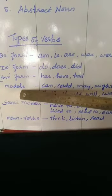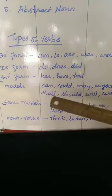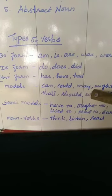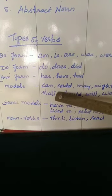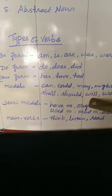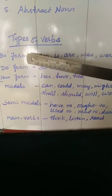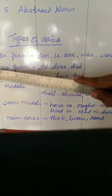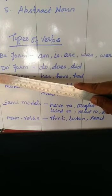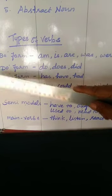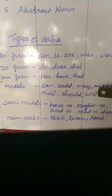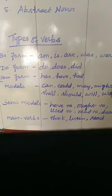Then, modals. What are the modal verbs? Can, could, may, might, shall, should, will, would — all these come under modal verbs. Be form verbs, do form verbs, have form verbs, and modals together are called auxiliary verbs, or otherwise they can also be called helping verbs. So modal verbs are: can, could, may, might, shall, should, will, and would.